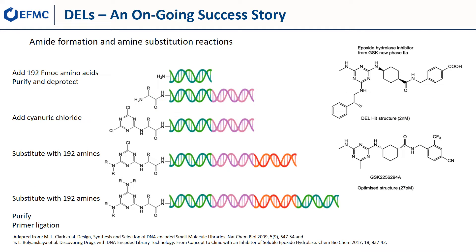This slide outlines a start-to-finish success story from GSK that identified a 2 nanomolar epoxide hydrolase inhibitor as a hit from a DEL library, which following optimization yielded a 27 picomolar candidate. FMOC-protected amino acids are added to a piece of DNA, purified, deprotected, and tagged. Then cyanuric acid is added to form a dichlorotriazine, and further amines and tags are added in two cycles and purified ready for use.